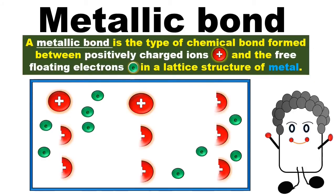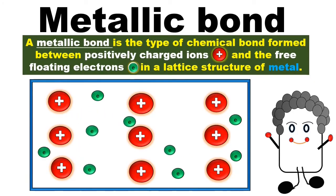A metallic bond is a type of chemical bond between the positively charged ions and the free-floating electrons in the lattice structure of a metal.